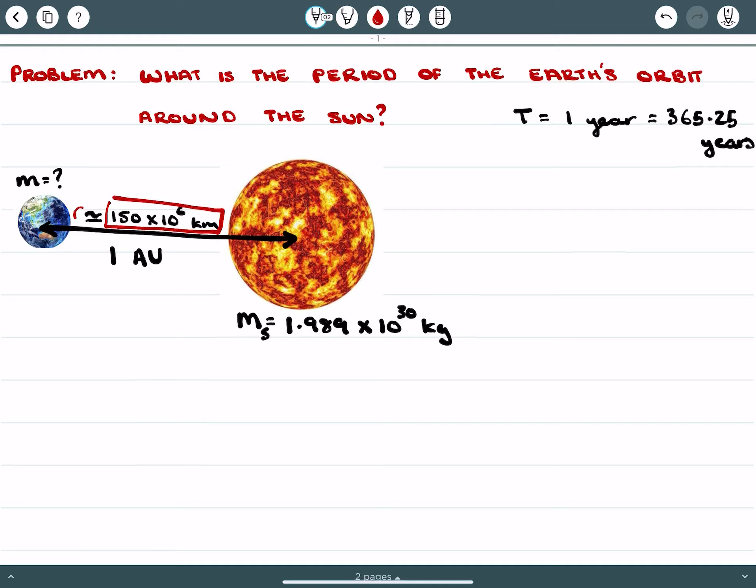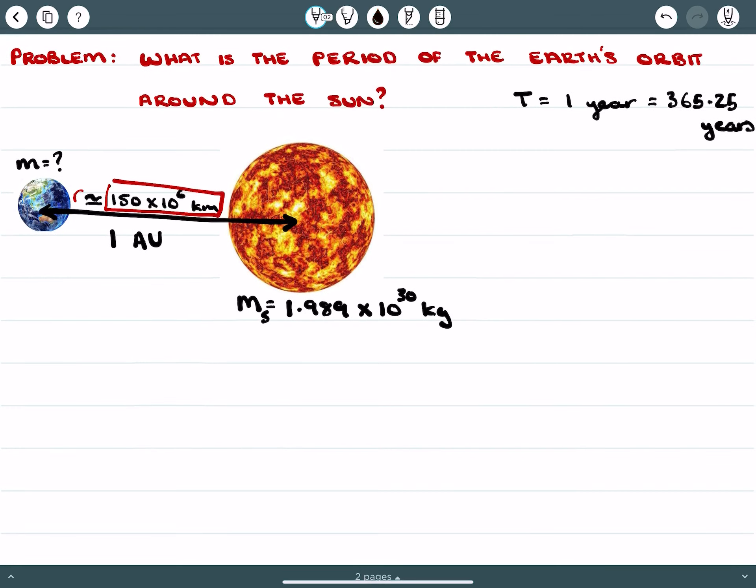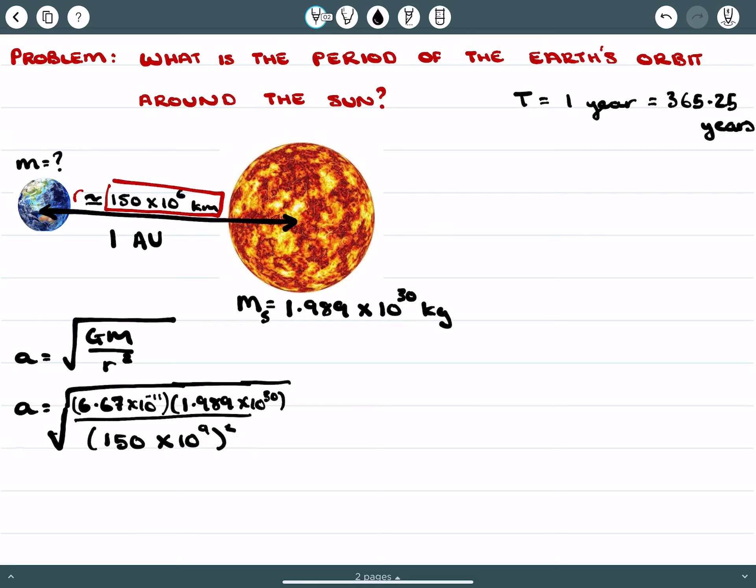So the first thing that we're going to do is we're going to ascertain what the acceleration is here. So the acceleration is going to equal the square root of GM over r squared, and if we plug in our values, we're going to get the gravitational constant times the mass of the Sun, all over... I'm just kneading this up a little bit for us, because we're squaring everything, so 150 million kilometers, and we have to convert that into meters and square.